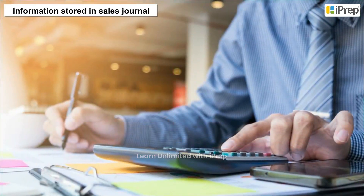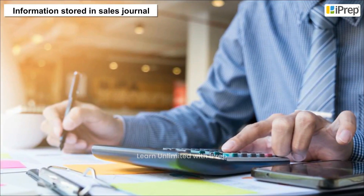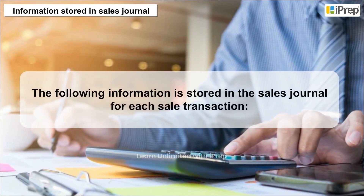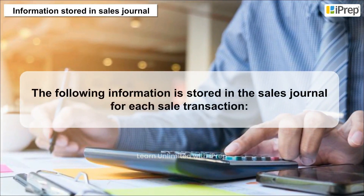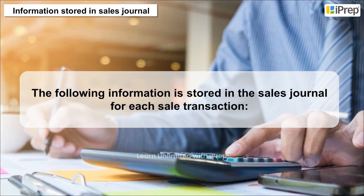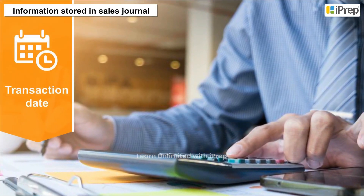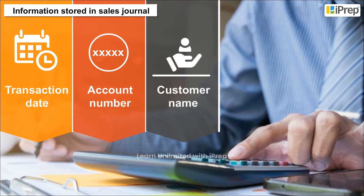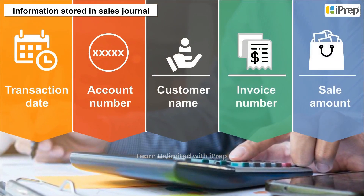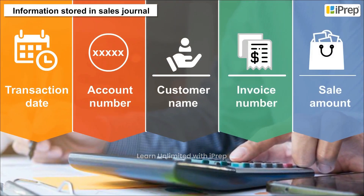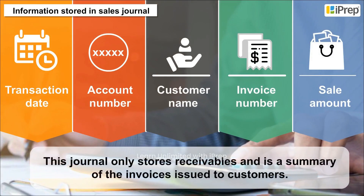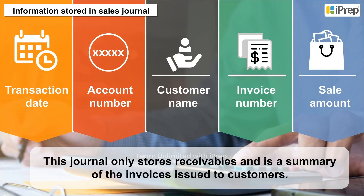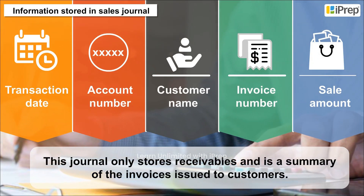Information Stored in Sales Journal. The following information is stored in the Sales Journal for each sale transaction: transaction date, account number, customer name, invoice number, and sale amount. This journal only stores receivables and is a summary of the invoices issued to customers.